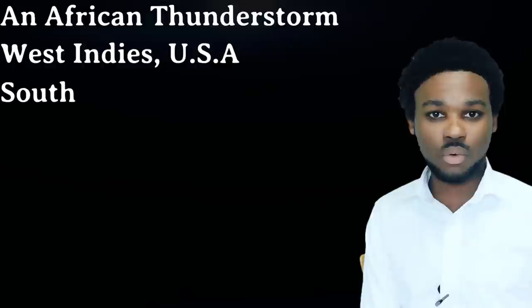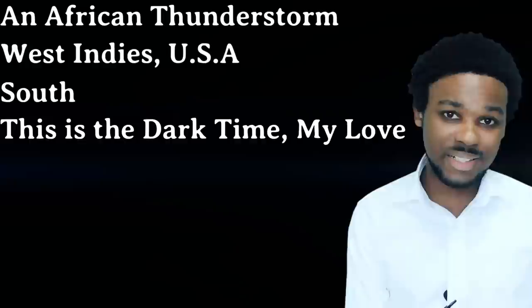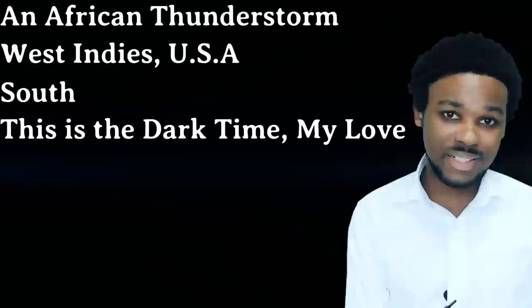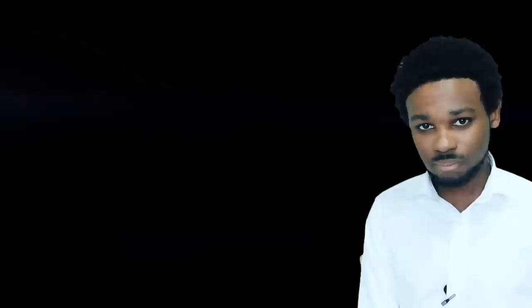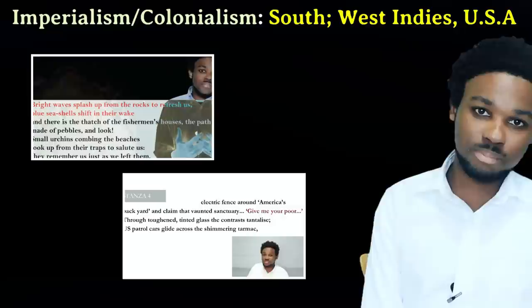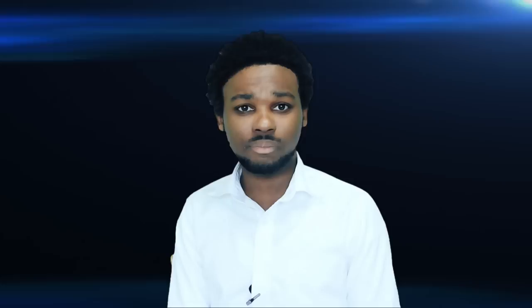Next theme: Imperialism and Colonialism. The poems are An African Thunderstorm, West Indies USA, South, and This is the Dark Time My Love. We are talking about one country invading and exploiting another. This theme is the bread and butter of An African Thunderstorm — we see that the thunderstorm represents the colonial forces that ravaged many African countries. We see something similar in This is the Dark Time My Love, where Guyana is being oppressed by the British. In South and West Indies USA, the imperialism and colonialism are a little less direct, as these poems are not set in colonial times but in more recent times. However, we can still clearly see these themes running through both poems.